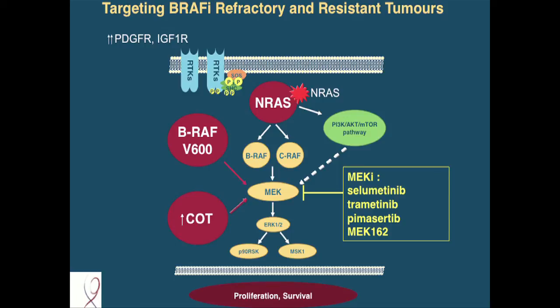These are some of the possible mechanisms of resistance. You have the RAS, RAF, MEK, and ERK pathways. But you can get mutations in NRAS that would then function independently and maybe go through C-RAF to stimulate MEK, to stimulate ERK, to cause growth. Or you can have different BRAF mutations — although those haven't really been found. Or there's another growth pathway called COT that can stimulate MEK. Or this PI3K-AKT-mTOR pathway can stimulate growth. So it seems like the common denominator here is MEK. So if we can block MEK in patients who are on vemurafenib or dabrafenib, can we salvage patients who are progressing? Can we make both drugs more effective at the outset?